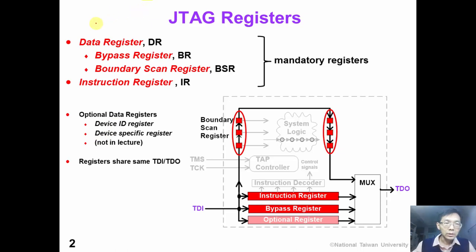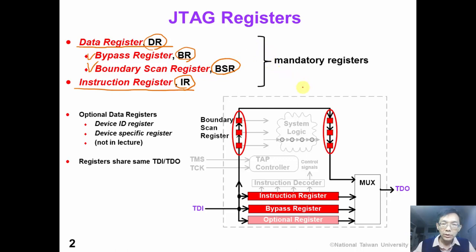There are two types of JTAG registers: data register (DR) and instruction register (IR). There are two important data registers: bypass register (BR) and the boundary scan register (BSR). These three types of registers are mandatory registers, as required by the JTAG standard.